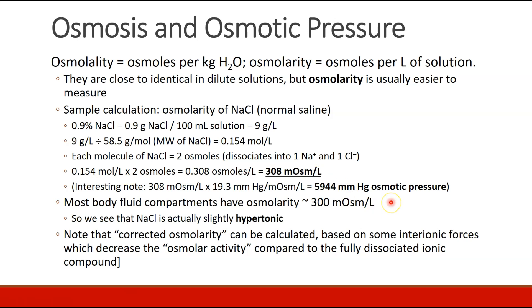This is the osmolarity of normal saline. It's interesting to note that you can convert osmolarity into an osmotic pressure — how much does this osmolarity in a compartment want to pull water into it? Using the formula, we come up with a value of close to 6,000 millimeters of mercury as osmotic pressure. Most body fluid compartments have an osmolarity around 300 milliosmol per liter, so normal saline is actually slightly hypertonic — but very close to normal physiologic osmolarity.